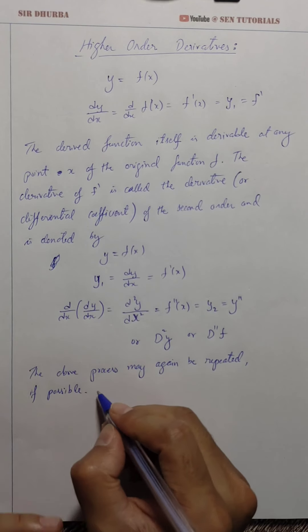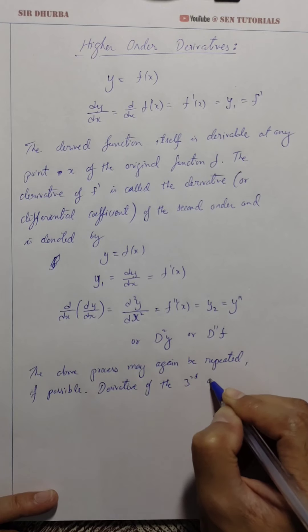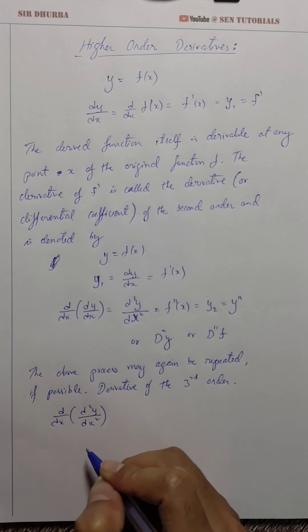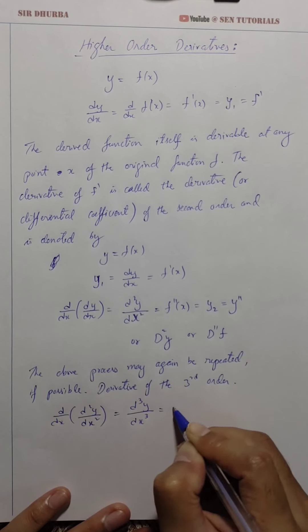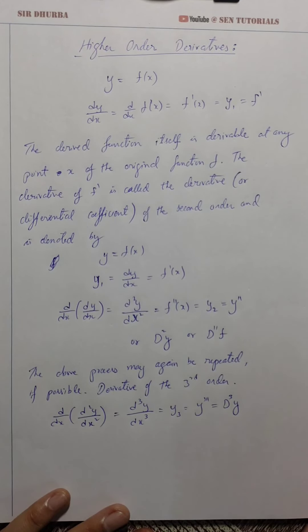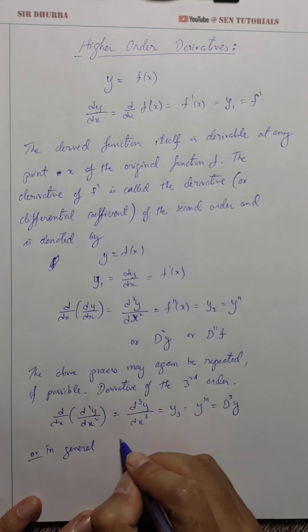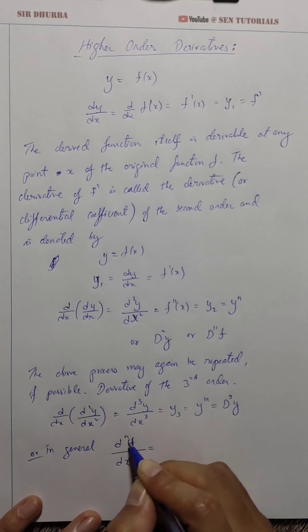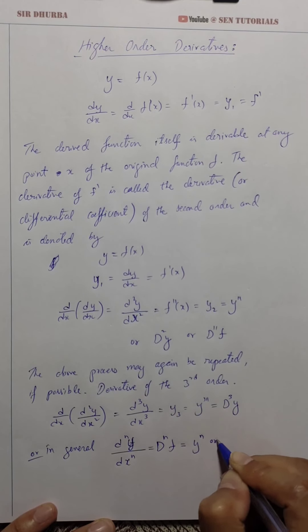Repeating the process gives us the derivative of the third order, denoted by d³y/dx³, y₃, or y'''. In general, we can keep repeating the process as long as it is possible, giving us the nth-order derivative denoted dⁿy/dxⁿ, dⁿf, yⁿ, or yₙ. This can be repeated as many times as possible, again only if the function's derivative exists at each stage.